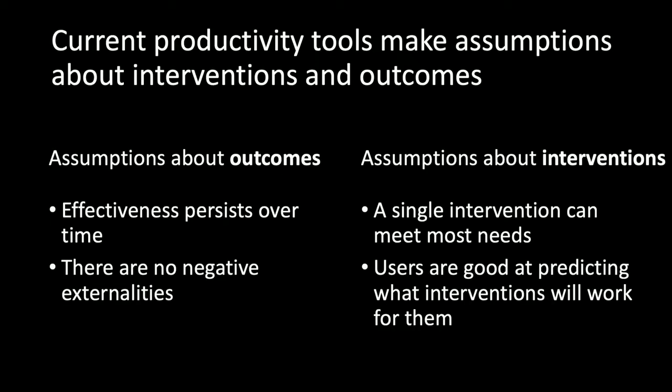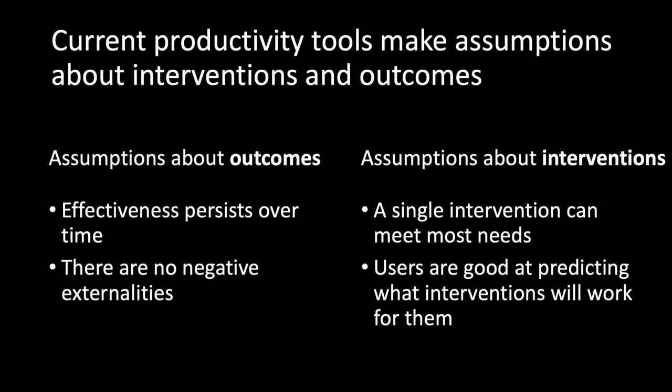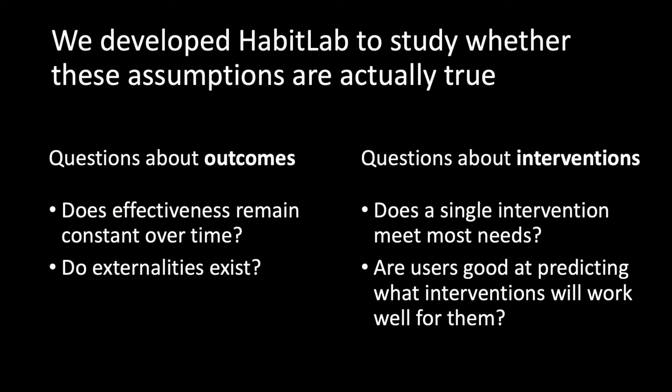Current productivity tools make a number of assumptions about interventions and their outcomes. With regards to outcomes, we assume their effectiveness persists over time, as opposed to being effective the first day and then progressively declining. There's also an implicit assumption that there are no negative externalities — that interventions won't influence time on other sites outside the one targeted. We also assume a single intervention can meet most user needs — one size fits all — and that users are good at predicting what interventions will work for them. We've developed HabitLab as a mechanism to study whether these assumptions are actually true.